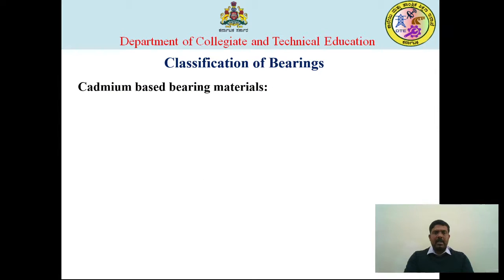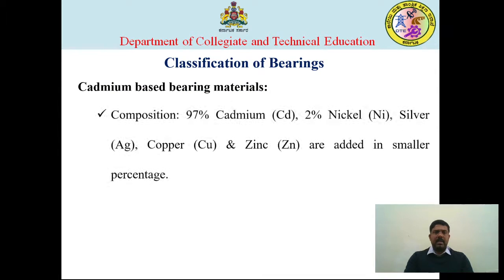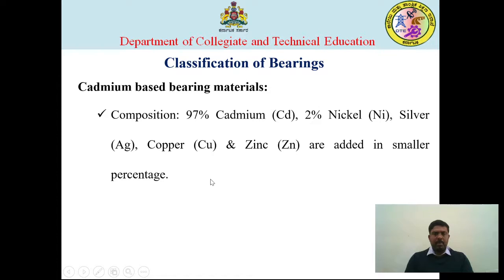Let us move on to cadmium-based bearing materials. Cadmium-based bearing materials include 97% of cadmium, 2% of nickel; silver, copper and zinc are added in a smaller percentage to improve the properties.